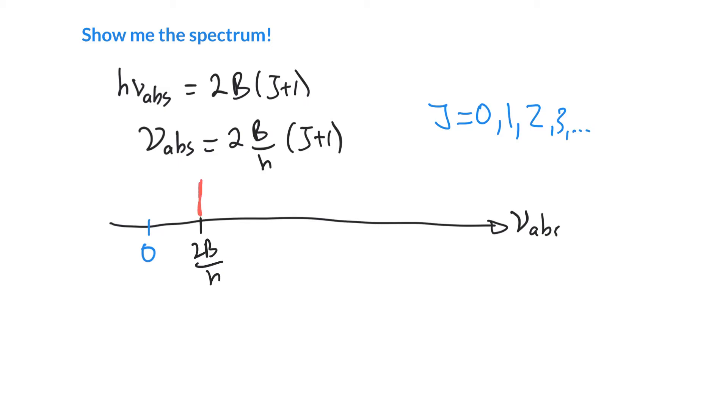If we take J as 1, we're going to have 2B/h times 2, so that's a frequency of 4B/h. That's our line in the spectrum, the 1 to 2 absorption. If J is 2, it'll be 3 times 2, so 6B/h. We can see a pattern here. This will be 6B/h, the next one 8B/h, the one after that 10B/h.